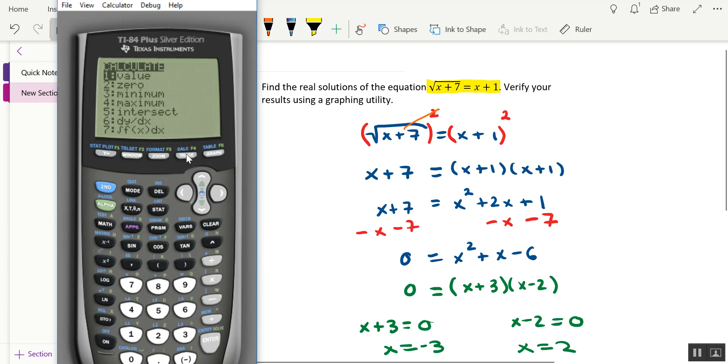Let's hit second, trace, and it's going to be option 5. And what you can do is locate your blinking cursor back on your viewing window, and I'm just going to arrow it over to the general vicinity of where these graphs are crossing.